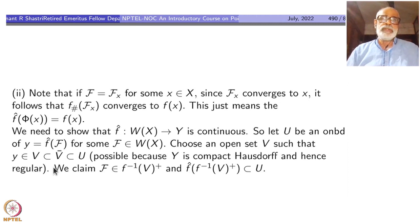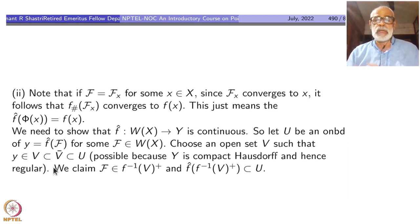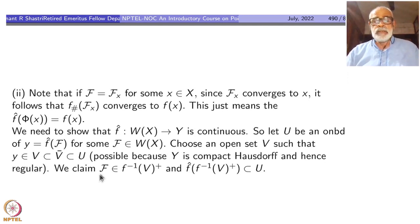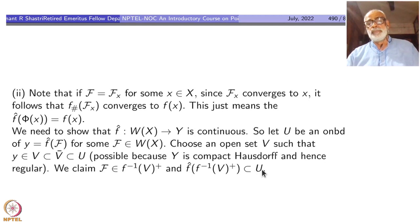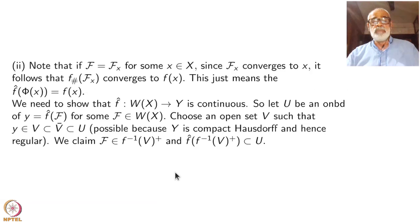We claim the filter F is inside f-inverse(V)-plus, an open subset in the Wallman compactification. Moreover, under f-hat, this f-inverse(V)-plus maps inside U. Since y equals f-hat(F), it is the limit of f-check(F) and that limit is inside V. So V belongs to f-check(F). Hence there exists some A in F such that f(A) is contained in V — that is how f-check is defined, taking image of members of F and then supersets.